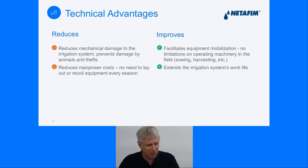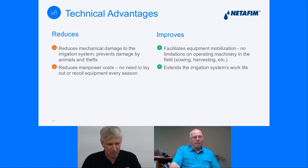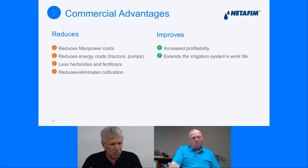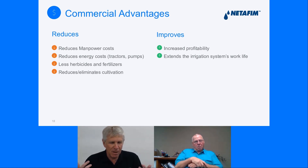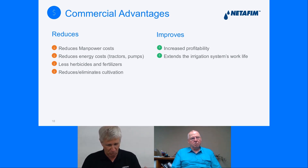Technical advantages: reduced mechanical damage to the irrigation system, prevention of damage by animals and thieves since you don't see the irrigation system, and reduced manpower cost. You install it once and that's it. Commercial advantages include: reduced manpower cost, reduced energy cost, less tractors, less pumping, less herbicide and fertilizers, and reduced or eliminated cultivation — though I wouldn't say eliminated, we can reduce cultivation to a minimum. In the other hand, we increase profitability and extend the irrigation system work life.